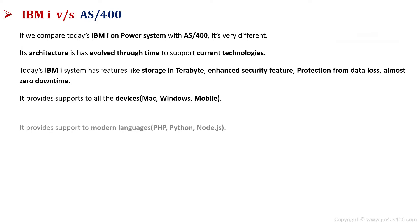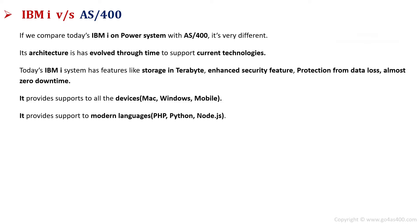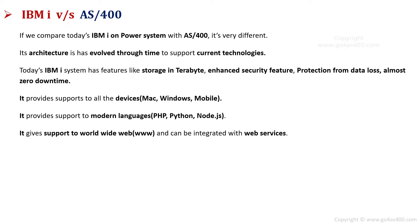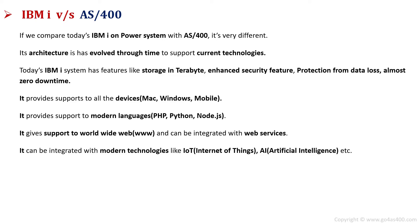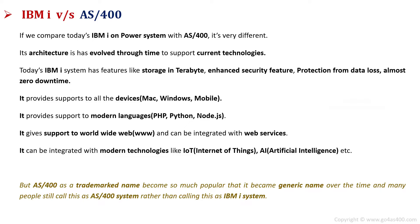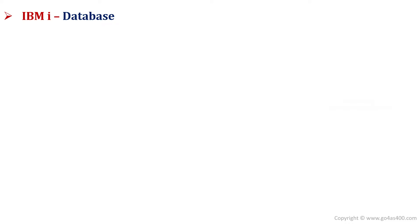It provides support to all devices, for example Mac, Windows, and mobile. It provides support to modern languages like PHP, Python, Node.js, etc. It gives support to the World Wide Web and can be integrated with many web services. It can be integrated with modern technologies like Internet of Things and Artificial Intelligence. AS400 as a trademark name became so popular that it became a generic name over time, and many people still call the system AS400 rather than IBM i.